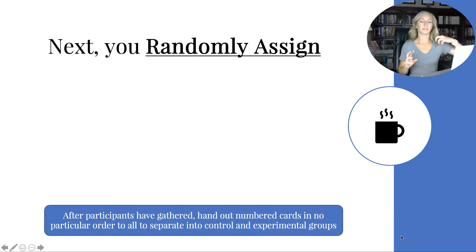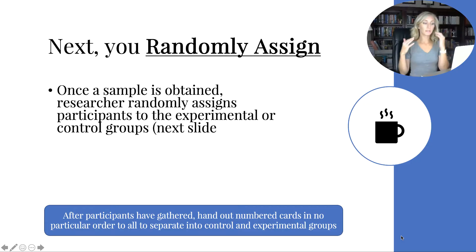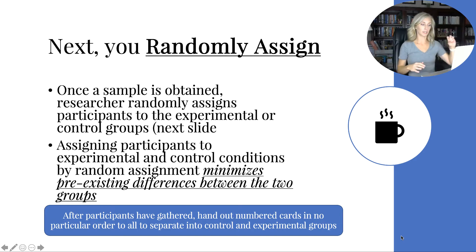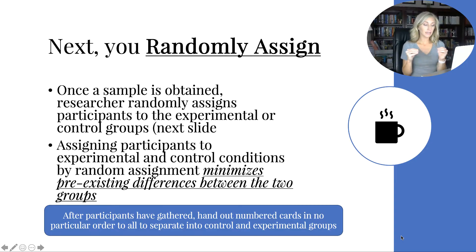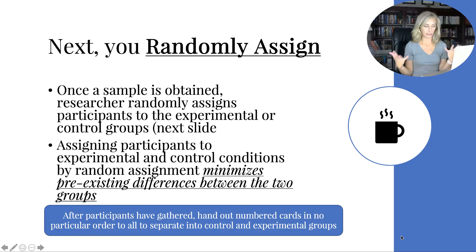Once you've randomly sampled, you have your participants. Next comes random assignment — once the sample is obtained, the researcher randomly assigns participants to either the experimental or control group. Assigning participants to conditions by random assignment minimizes pre-existing differences between the two groups. After participants have gathered, you might hand out numbered cards in no particular order to separate them into control and experimental groups.